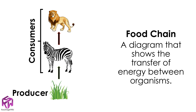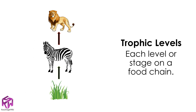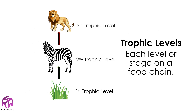Before we look at the transfer of energy along the food chain, we must remember the term trophic levels. These are each stage of a food chain. A producer always occupies the first trophic level, and consumers occupy the higher trophic levels.